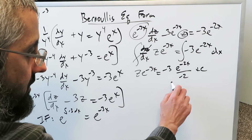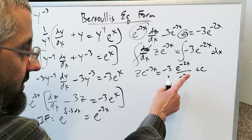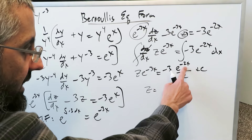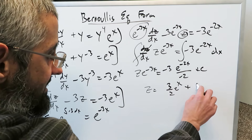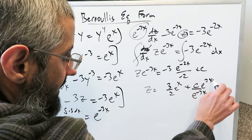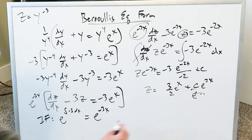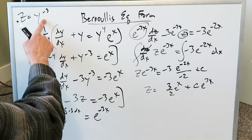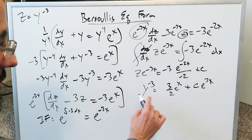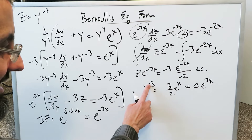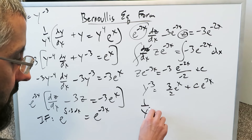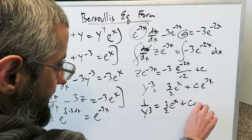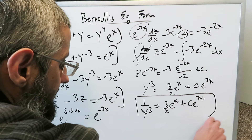Cancelling the negatives gives 3 over 2. Taking e to the minus 3x to the other side and applying laws of exponents: e to the minus 2x divided by e to the minus 3x gives e to the x, and c divided by e to the minus 3x gives c e to the 3x. So z equals 3 over 2 e to the x plus c e to the 3x. Since z equals y to the minus 3, we substitute back: y to the minus 3 equals 3 over 2 e to the x plus c e to the 3x, or equivalently 1 over y cubed equals 3 over 2 e to the x plus c e to the 3x. This is a correct and complete answer.